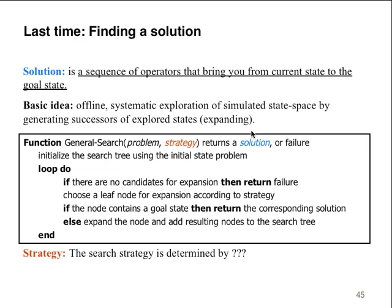If I said get in your car and back it out so that you minimize the amount of gas you take — well, there's a solution to that. Many different ways of doing it, but there's one that's going to minimize the gas. Also, we have the basic idea of offline systematic exploration of simulated state space. The strategy is basically: how do you know which search strategy and which approach you're going to take to solve the problem, to come up with the solution? Because sky's the limit if you think about it, especially if you apply different disciplines to the problem.